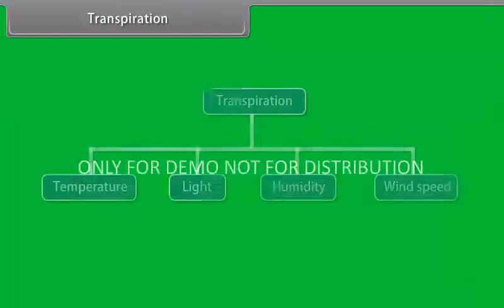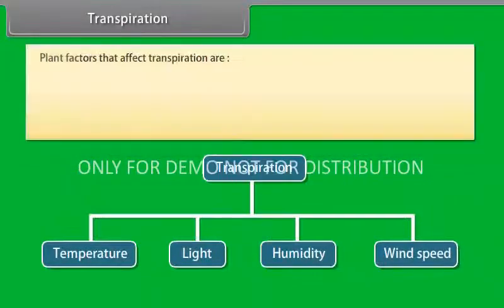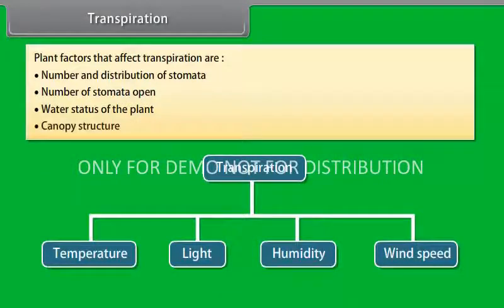Transpiration is affected by several external factors like temperature, light, humidity, wind speed. Plant factors that affect transpiration include number and distribution of stomata, number of stomata open, water status of the plant, canopy structure, etc.